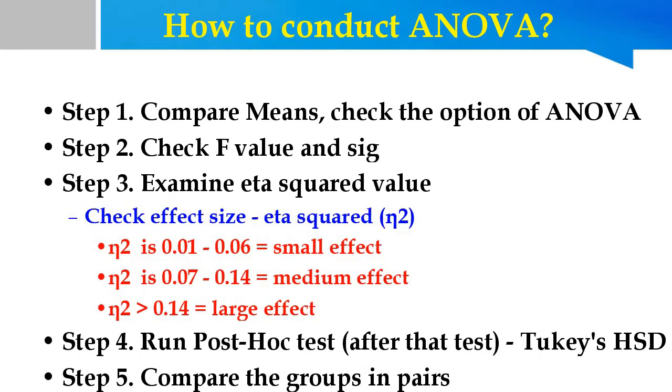Now compare means, check the option of ANOVA. Then examine the F statistics and significant values. If the P value is less than 0.05 or even equal to 0.05, that means statistical significant difference exists among the groups.